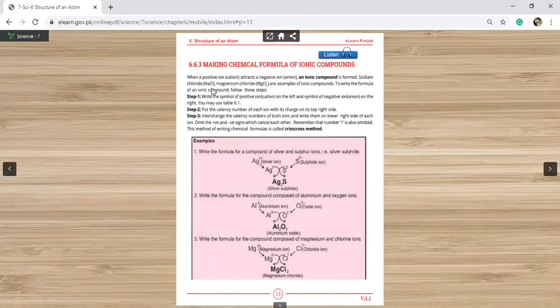Sodium chloride NaCl, Magnesium chloride MgCl2 are examples of ionic compounds. To write the formula of ionic compounds, follow these steps.